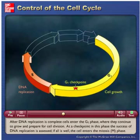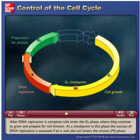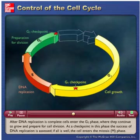After DNA replication is complete, cells enter the G2 phase where they continue to grow and prepare for cell division. At a checkpoint in this phase, the success of DNA replication is assessed. If all is well, the cell enters the mitosis phase.